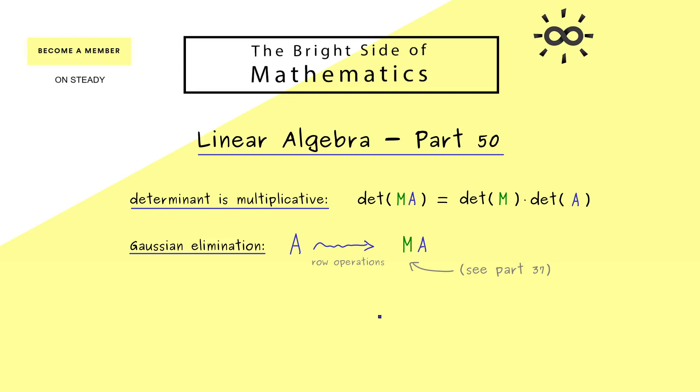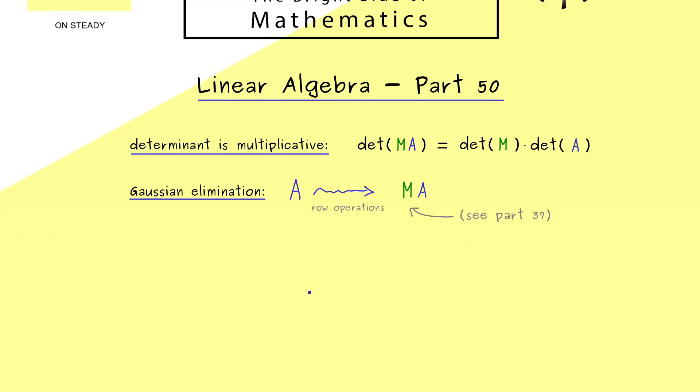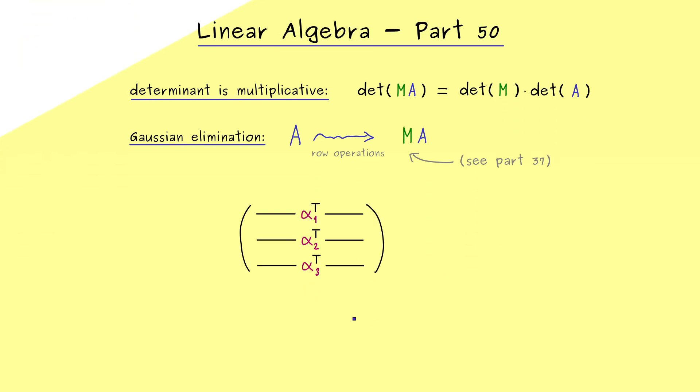And now the question is what do we know about the determinant of such a matrix M because that's what we need to calculate the whole determinant here. So in order to understand that let's look at some simple row operations again. Ok for example here you see we have three rows and now we have the common case that we want to add multiples of one row to another row. So we could add lambda times the first row to the third row.